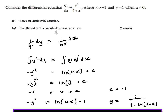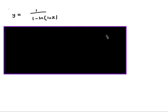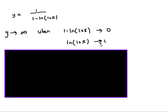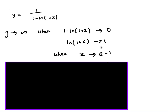The second part says find the value of a for which y tends to infinity as x approaches a. y is going to approach infinity when the denominator gets closer and closer to 0, because 1 divided by an ever-smaller number gets ever-larger. So basically 1 take away ln(1 plus x) is tending towards 0, which means ln(1 plus x) must be approaching 1. I can effectively e both sides and then take away 1, so x approaches e minus 1.